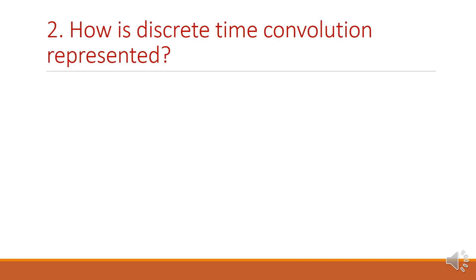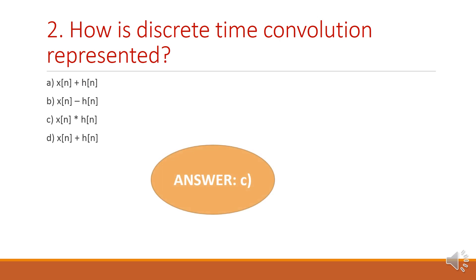Next question: how is discrete time convolution represented? Discrete time convolution can be represented as X of n star H of n. The star symbol represents the convolution operator. So X of n star H of n. Therefore the answer is option C.